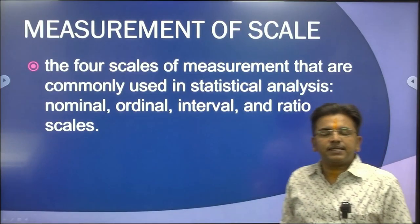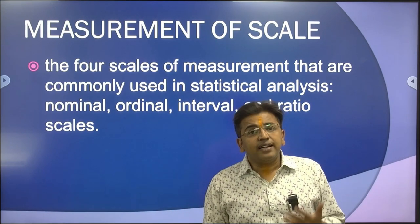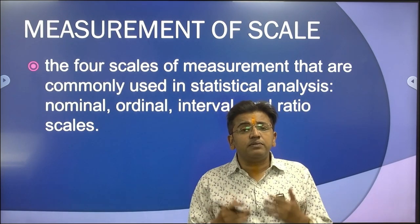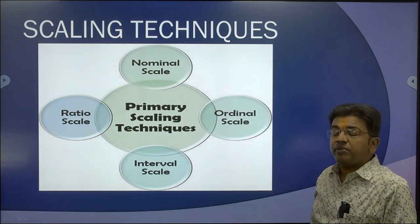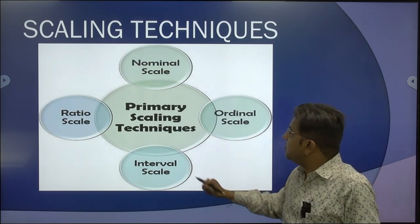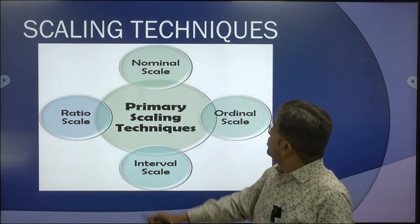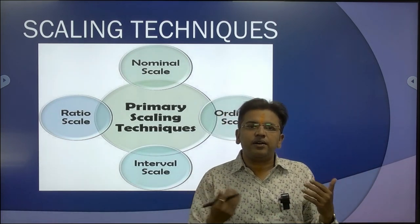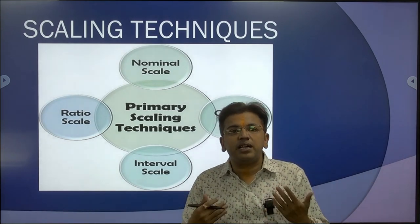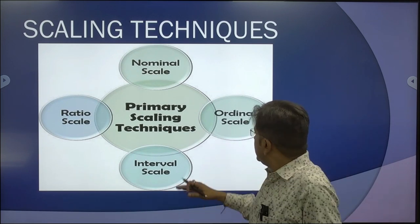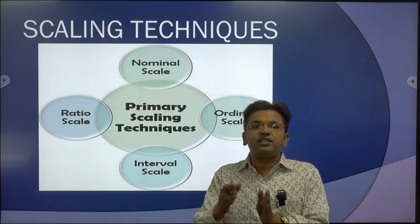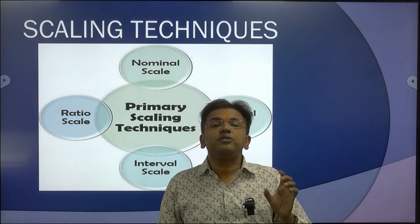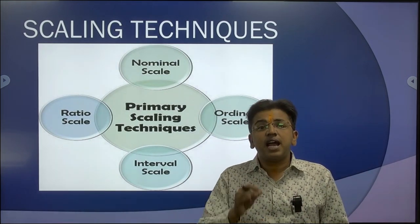Now, measurement scales. There are four most important scaling techniques. The first is nominal scale, the second is ordinal scale, the third is interval scale, and the fourth is ratio scale. In nominal scale, a researcher gives respondents options like yes or no. In ordinal scale we go with measurement and magnitude. In interval scale we give the respondent certain intervals to respond on. In ratio scale, which is the best scale in research, all values are in proportionality and have the same ratio.